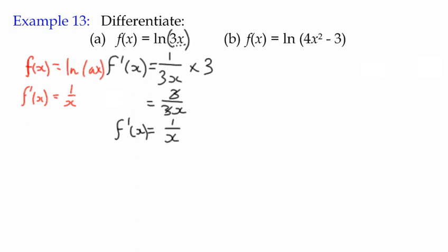In part b, is there any difference to what we need to do? Not really—we just have a second order function, a quadratic term. Our derivative again uses the chain rule. It's one over 4x² minus 3 multiplied by the derivative of the term in the bracket, which is 8x. This time we can't cancel anything out, so we write it as 8x over 4x² minus 3.